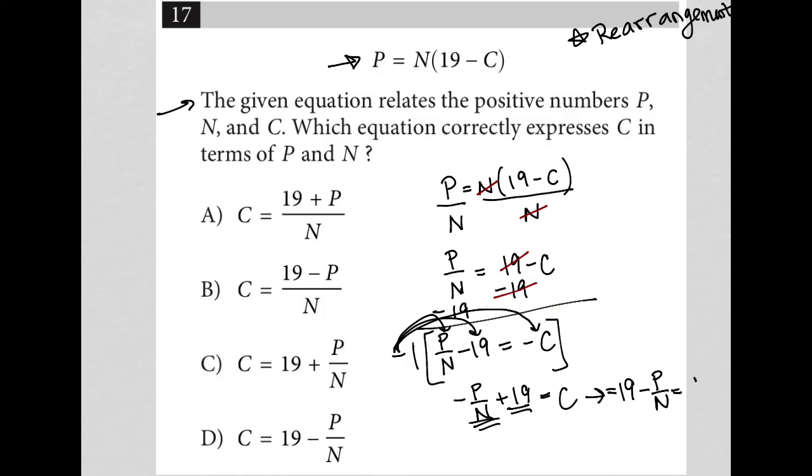Let's just say it's equal to C on the left, just so that it looks the way our answer choices look. So there's my answer: C is equal to 19 minus P over N, and therefore the correct answer here is choice D, C equals 19 minus P over N.